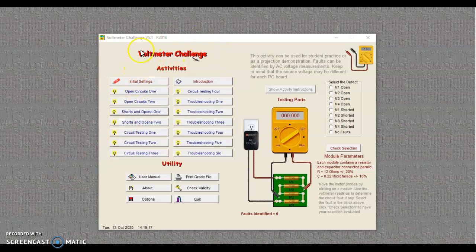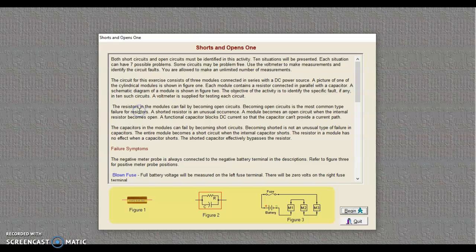Okay, here we are in voltmeter challenge. Today we're going to look at shorts and opens one. We're going to look at a unit that has three different modules in it, and those modules could either be shorted or they could have open circuits. We're going to use the voltmeter to find those problems.